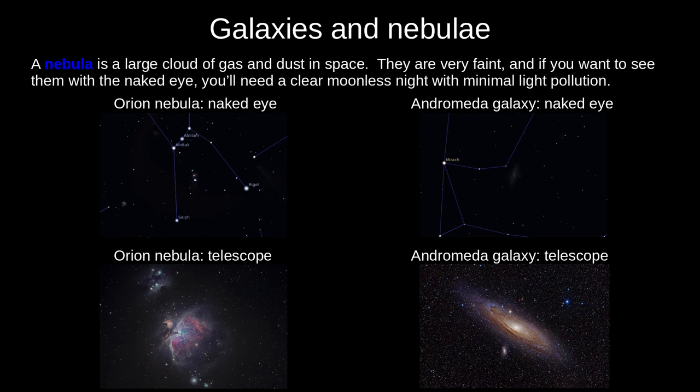A nebula, Latin for cloud, is a large cloud of dust and gas, formed in a few different ways. They are very faint, and if you want to see one with your naked eye, you'll need a clear moonless night with minimal light pollution and good dark adaptation. To the left, you can just see the Orion Nebula, the middle of Orion's sword. To the right is the Andromeda Galaxy. If you can't quite make them out, I've also given you telescopic photographs of both.